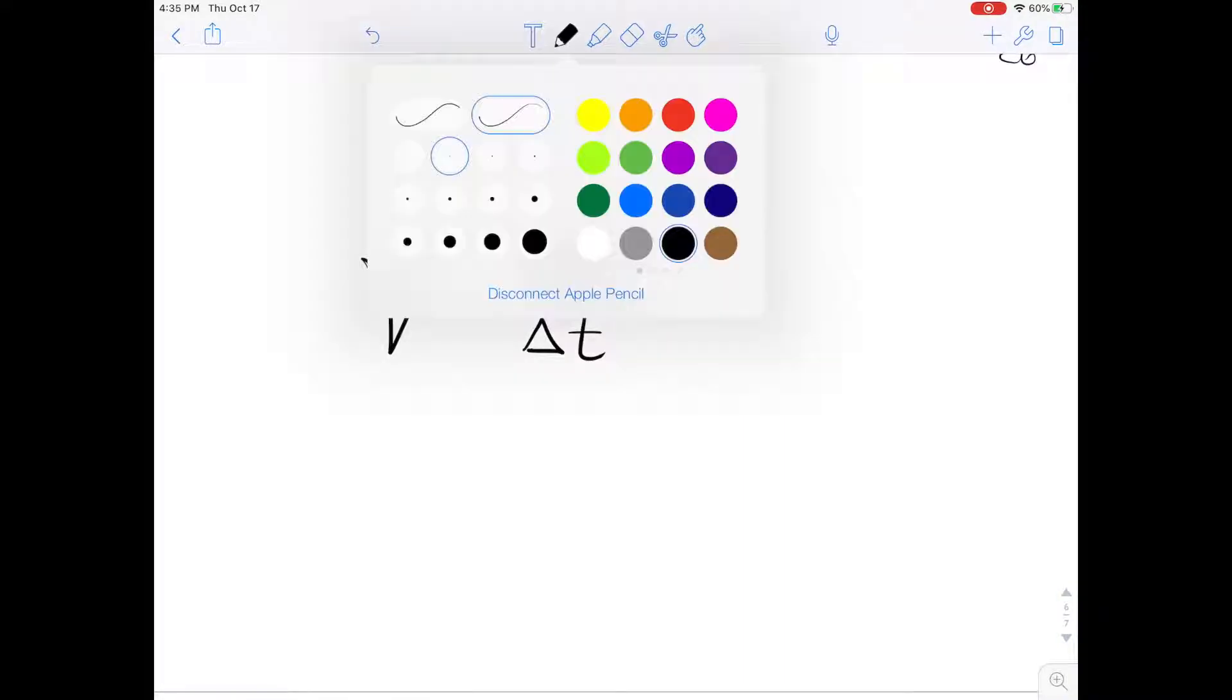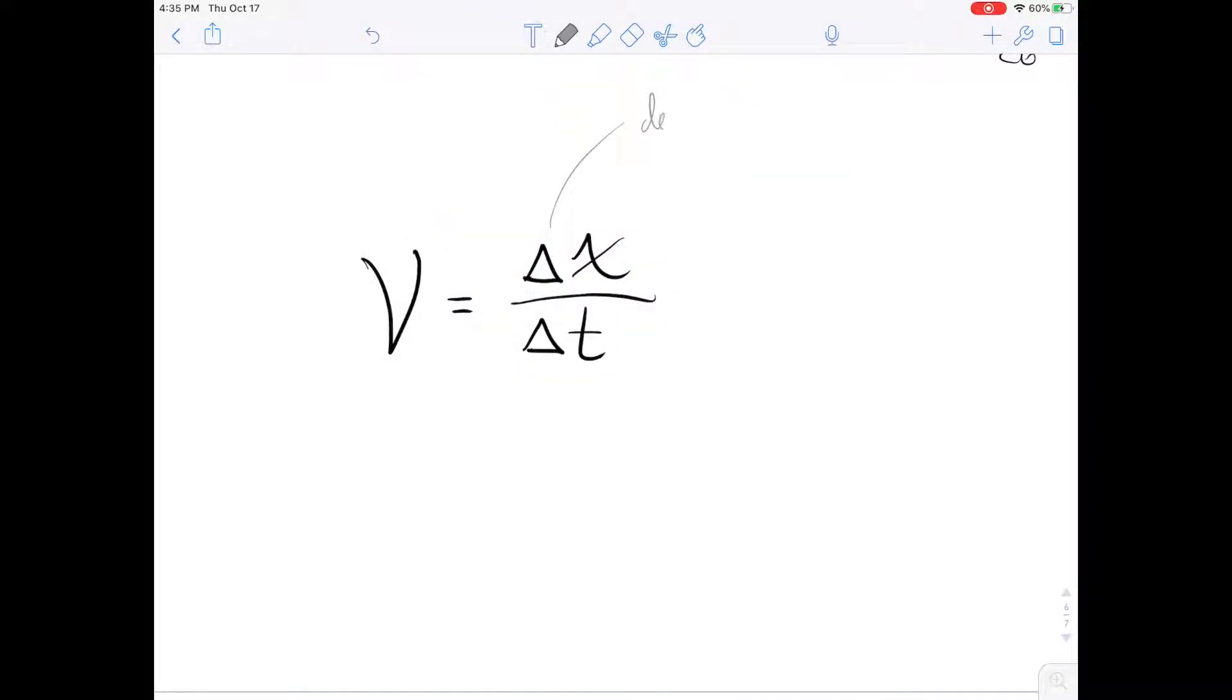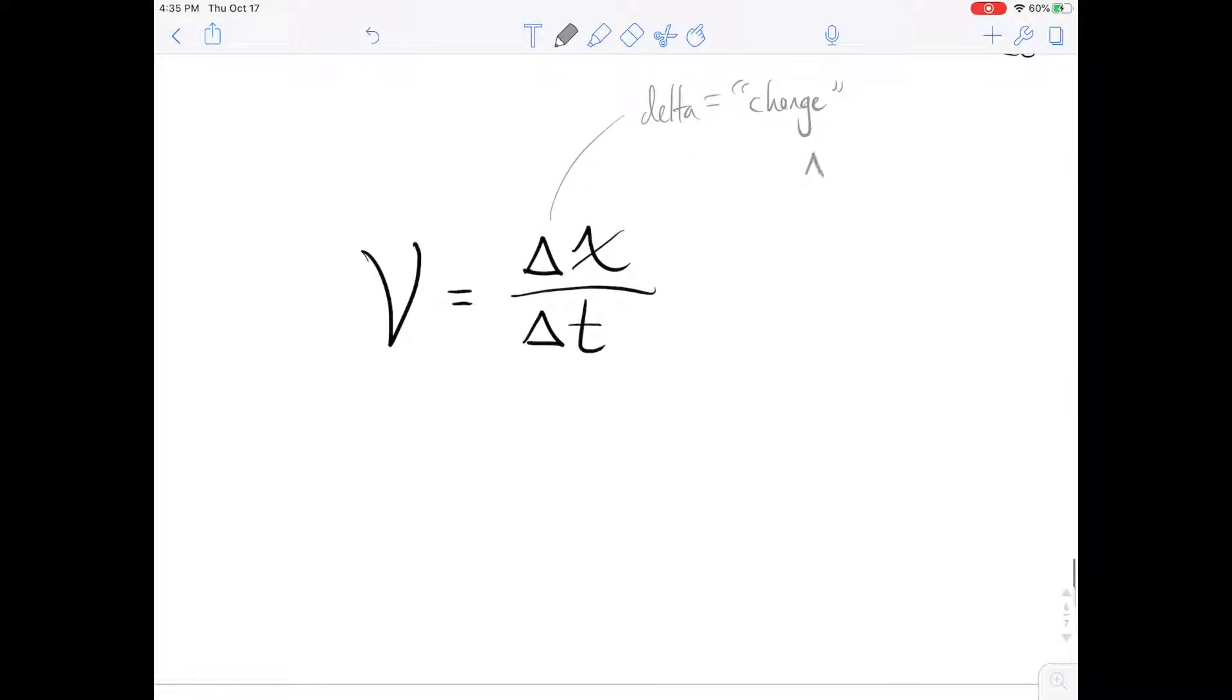This delta is a fancy Greek letter that just means change. Mathematically speaking, delta x formally is the final x, the last position, minus the initial position. And a lot of times we don't even need to bother with calculating it because we just know it intuitively ourselves.